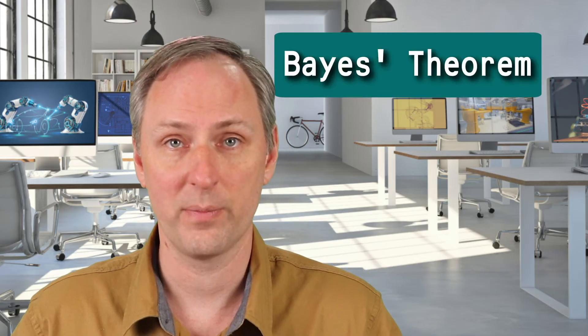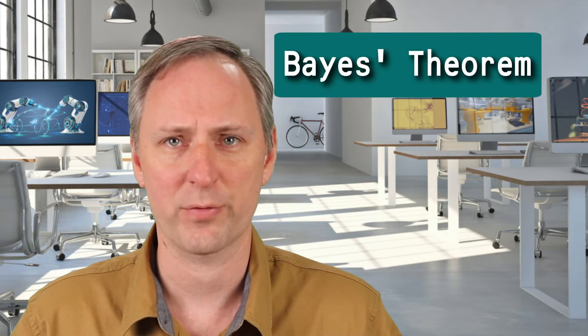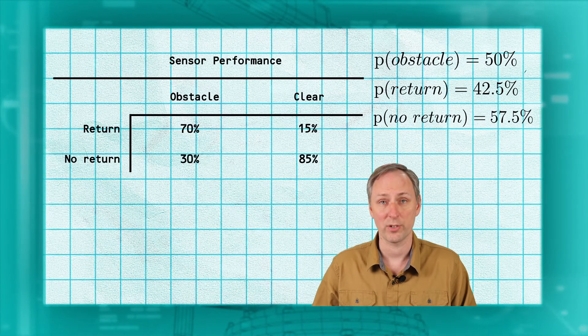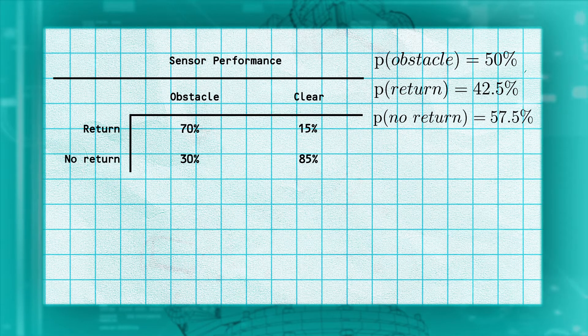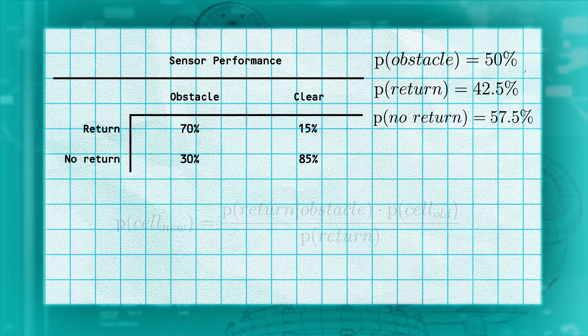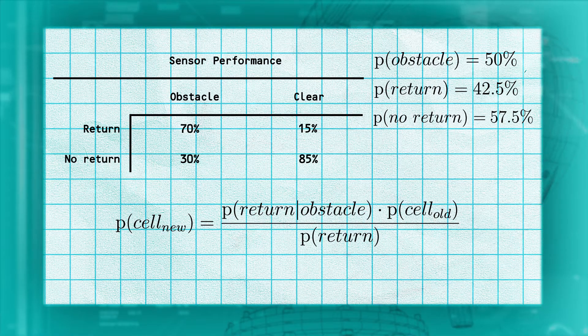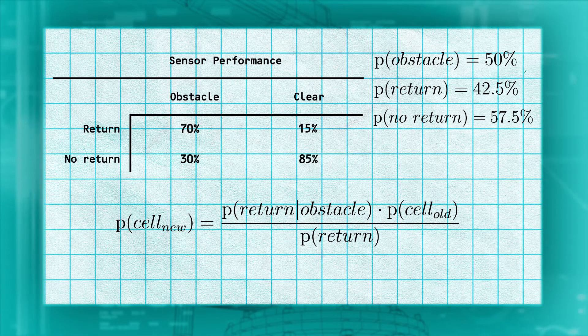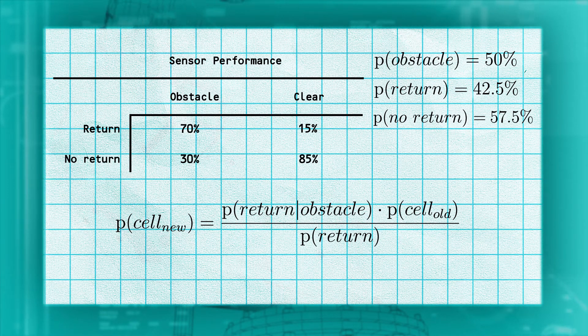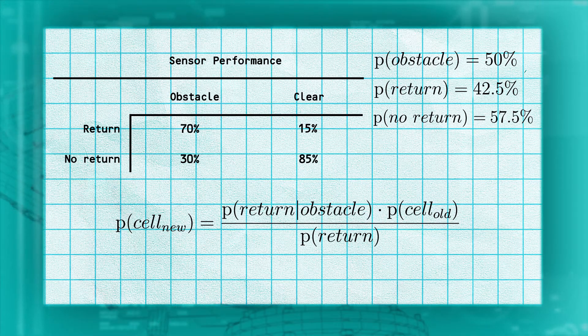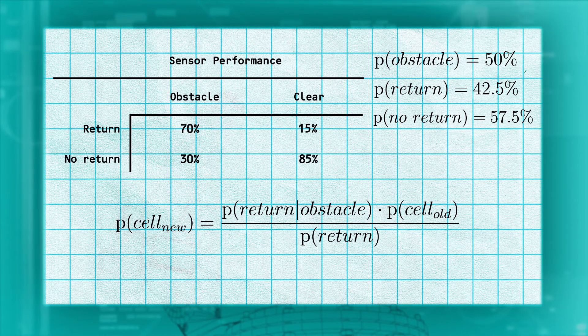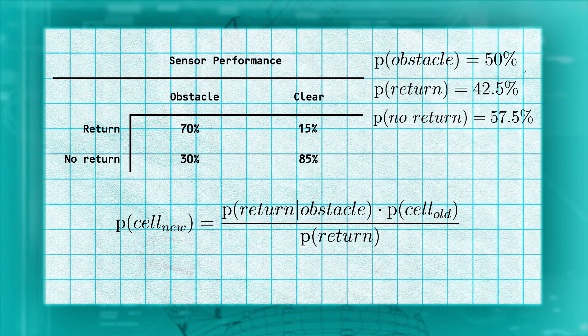Now we have everything we need to update our cell value. We'll use a formula you may not have seen before called Bayes' theorem. We won't get into where this comes from, but we will walk through how to use it. The theorem says that the updated probability that a cell contains an obstacle is equal to the probability of an obstacle based on whether we got a return or not, multiplied by the current probability of there being an obstacle, divided by the overall probability of a return.